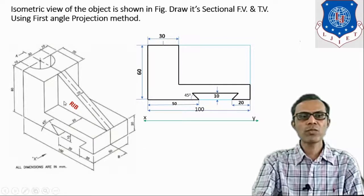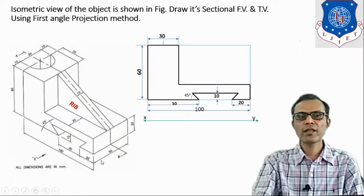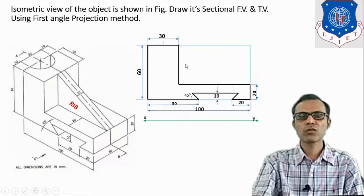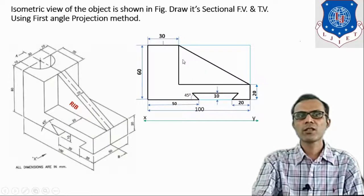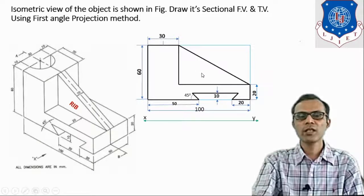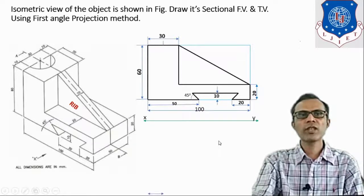Now looking at this object, the rib will look like a triangular shape. For this flange, there are two points — first point and second point — so simply join these two points. This slant edge is shown here, and this triangular shape is represented in the front view. So this is the front view for the rib, and these are all the visible details clearly seen from the front view direction.